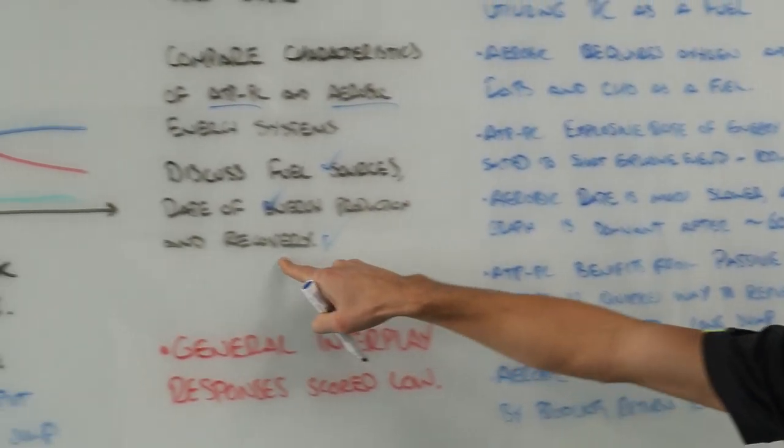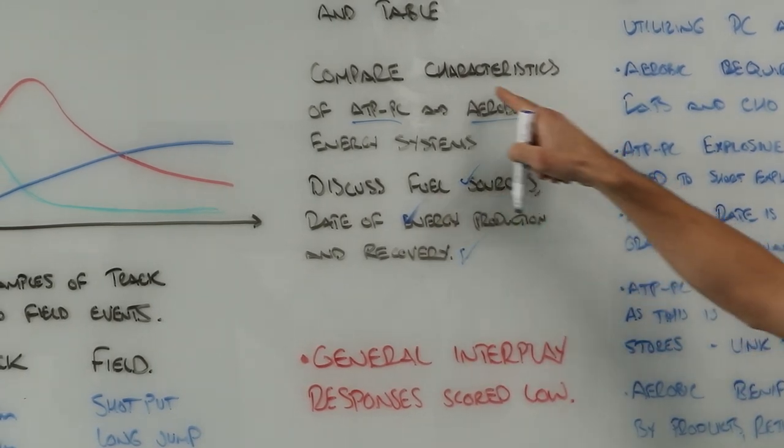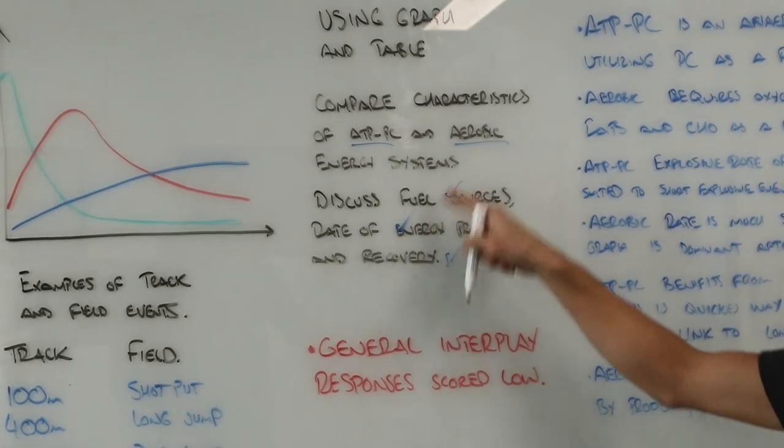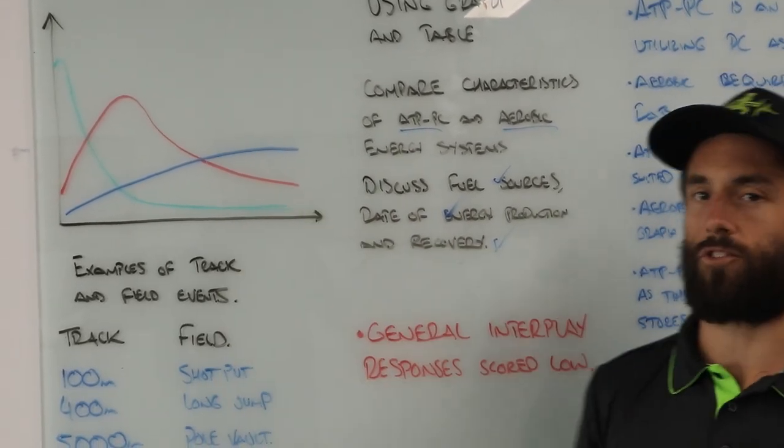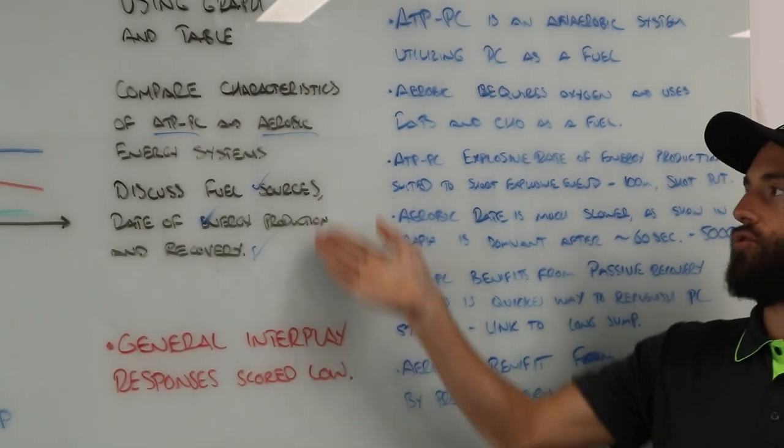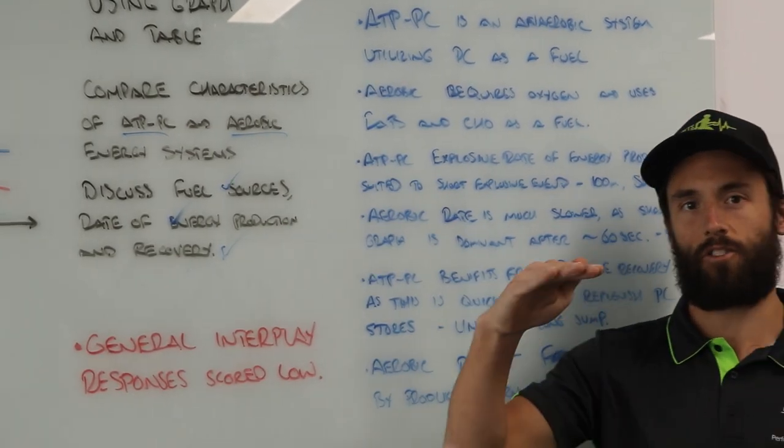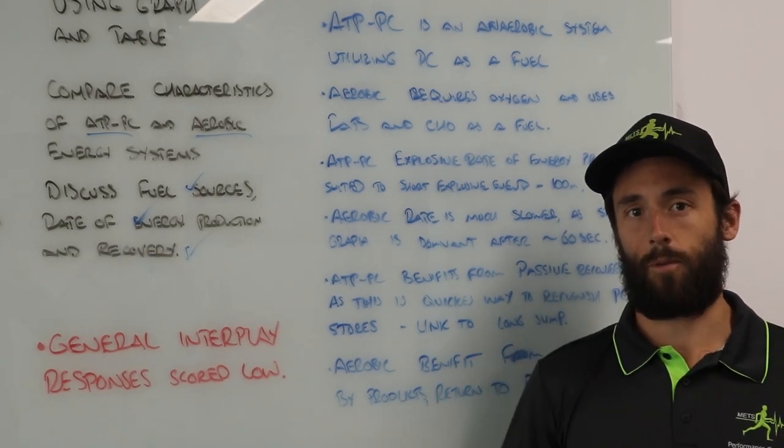Tick, right, we've linked, we've said recovery, we've done our rate of energy production, we've done our fuel sources, we're comparing the characteristics of the two systems, we've used the table and we've used the graph to do that. We don't need to do interplay, we just want to address all those points for 6 marks, we've got a lot of space, give all the information you know within that scope of that question.